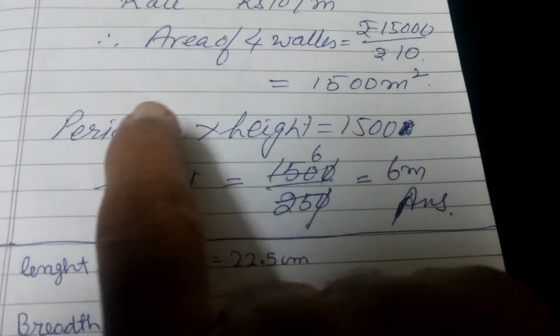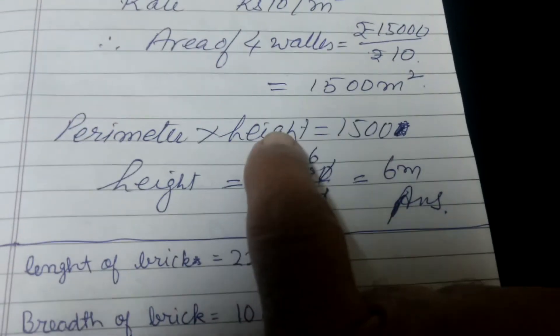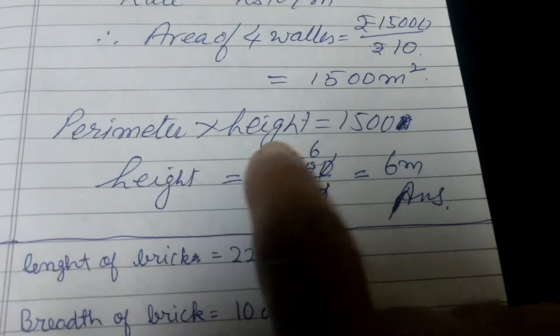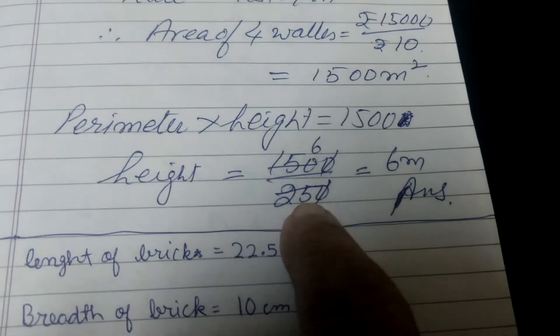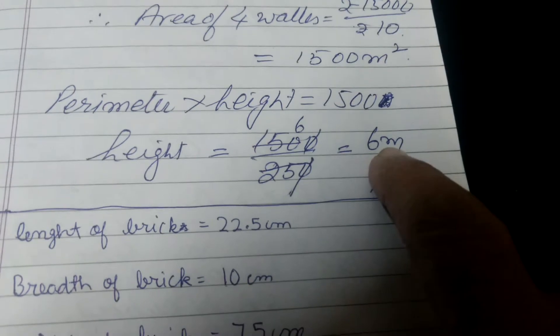The area formula is perimeter into height. So if we have the area and perimeter, we can find the height. So 6 meters will be our answer.